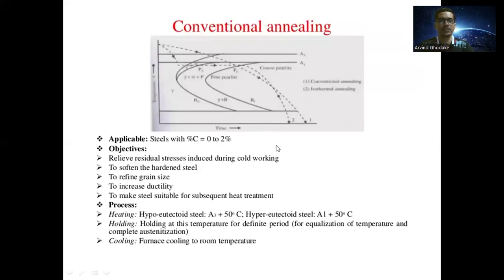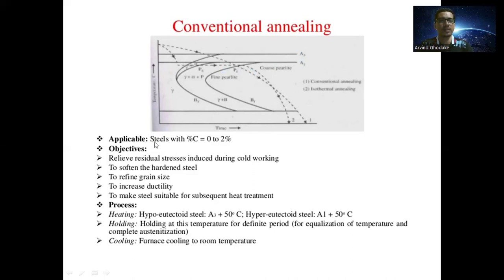The first heat treatment discussed is conventional annealing. Annealing is the heat treatment process where the steel is heated above the recrystallization temperature in the furnace, and cooling is carried out by switching off the furnace itself. There are two types: conventional annealing and isothermal (constant temperature) annealing. In conventional annealing, austenite transforms into coarse pearlite, and it is applicable for steel with 0 to 2% carbon.